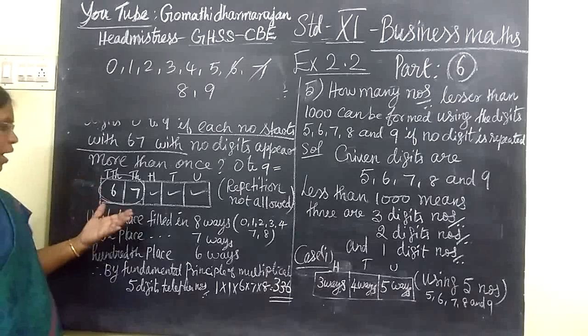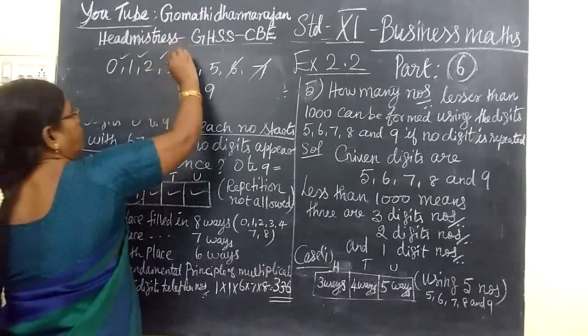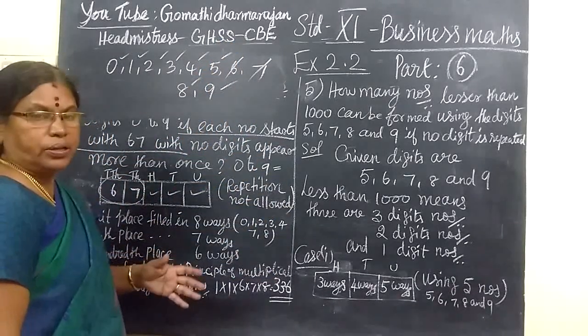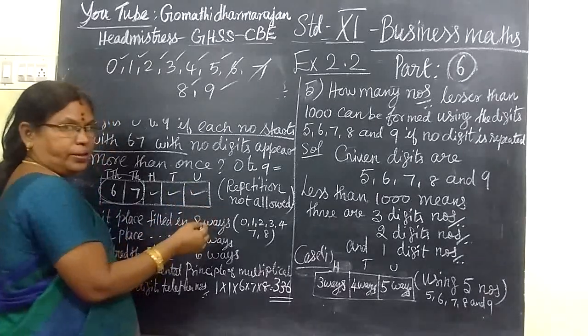7 is also there, because it will repeat 3 times. So using this 1, 2, 3, 4, 5, 6, 7, 8, we can choose in 8 ways. So there are 8 numbers. We can choose in 8 ways.